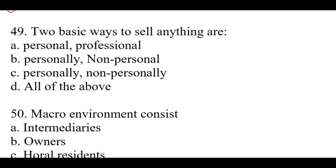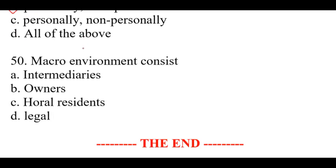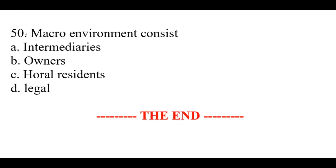Question number forty-nine: Two basic ways to sell anything are — right option is B: personally and non-personally. Question number fifty: Macro environment consists — right option is D: legal.